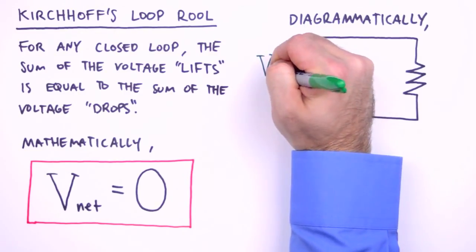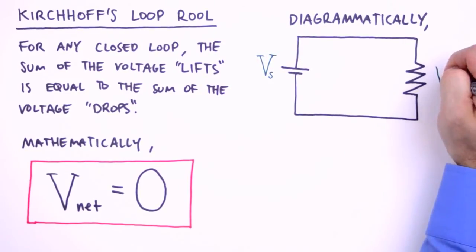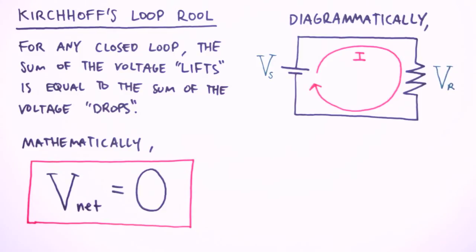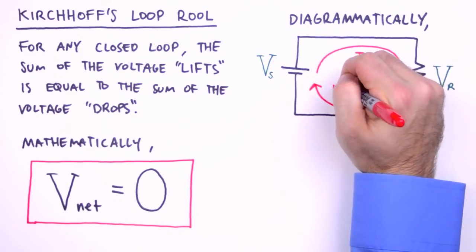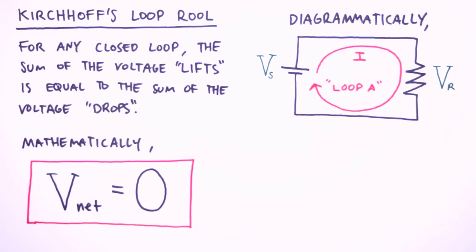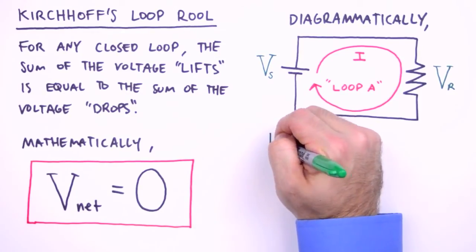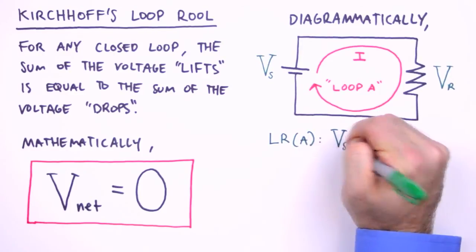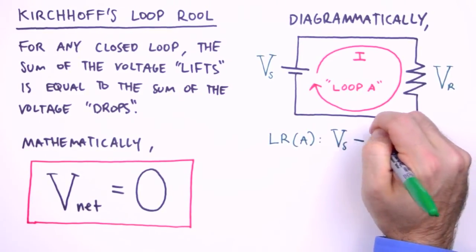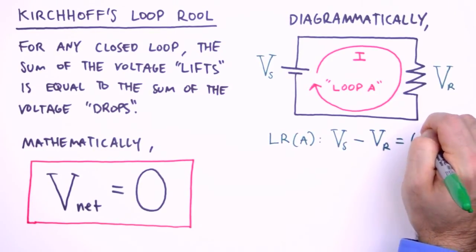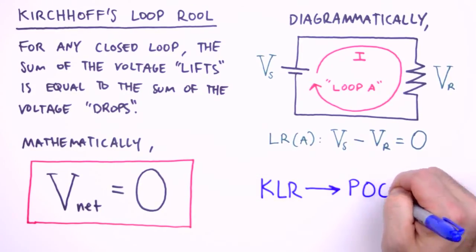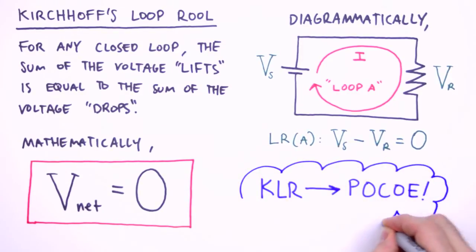Here we have a voltage source V sub S and a voltage across the resistor V sub R. Since it's a simple circuit, we have a singular current whose direction of positive charge flow is clockwise due to the orientation of the voltage source. We label the circuit loop as loop A. To apply the loop rule, we travel clockwise summing voltages: starting on the bottom left we have positive V sub S — a voltage lift — then moving around we have negative V sub R — a voltage drop. We set that equal to zero. Kirchhoff's loop rule, like the junction rule, has its roots in conservation of energy.